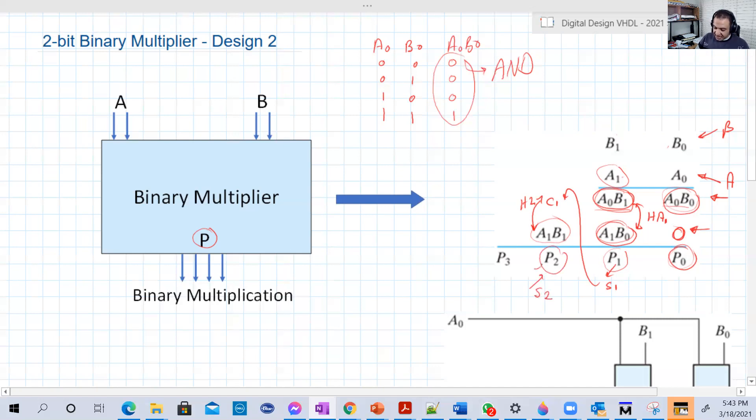And P2 will be basically S2. And again, the carry C2 will be added to 0 here. So P3 is basically C2 all the time. P0 is A0 B0, the ANDing between the first bit of the first binary numbers and the first bit of the second binary numbers. And always the most significant bit of the output, the product, is basically the second carry of the second half adder all the time.